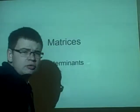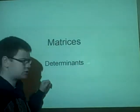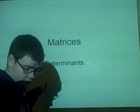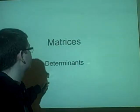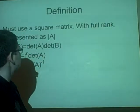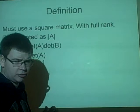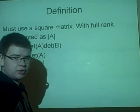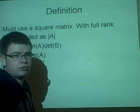This is lecture 12 on matrices, on determinants and permutations. There's a lot to go through. First off, the definition. To find a determinant, the matrix has to be square with full rank.